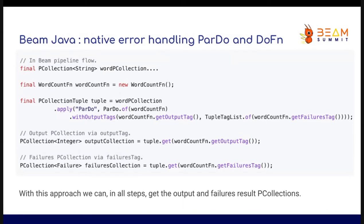Here I'm going to show you in the Beam pipeline the use of the previous DoFn class. I instantiate my word count DoFn and create the PCollectionTuple. I have my input PCollection and with the withOutputTags system I pass the output tag and the failure tag. At the end I can recover my output PCollection and also my failure PCollection.